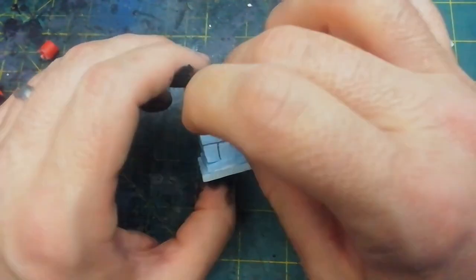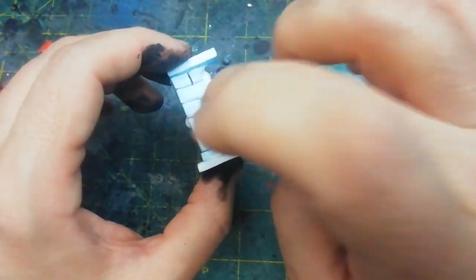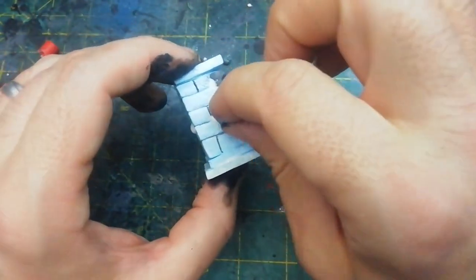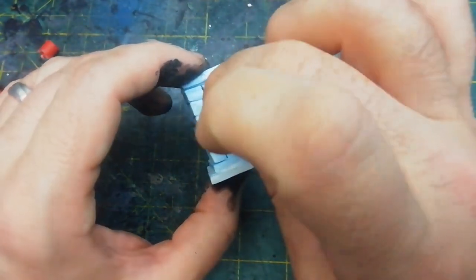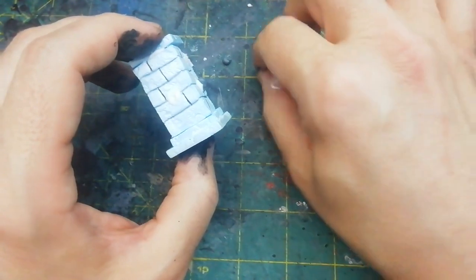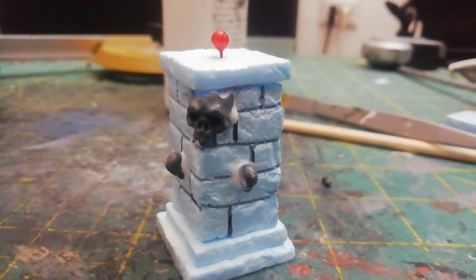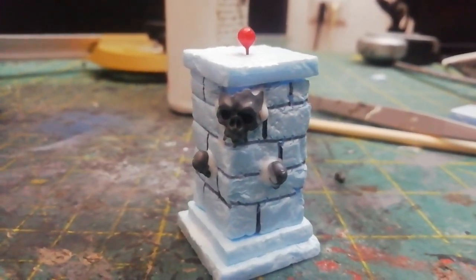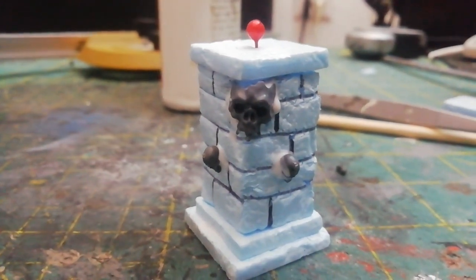I created the life point pillar with the simplest possible method. I already have countless videos on the channel on how to create pillars and brick walls. Take a look. In addition to a decorative effect, I inserted a large skull on one of the corners. This will indicate the position of my score on the sphere.